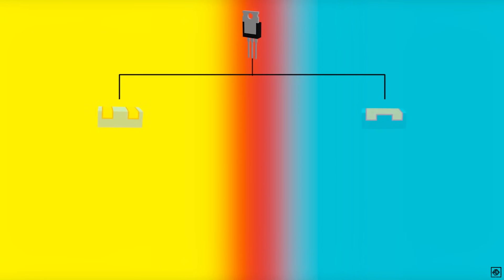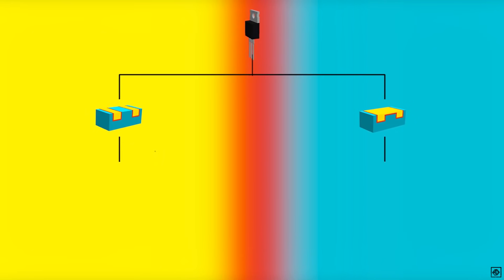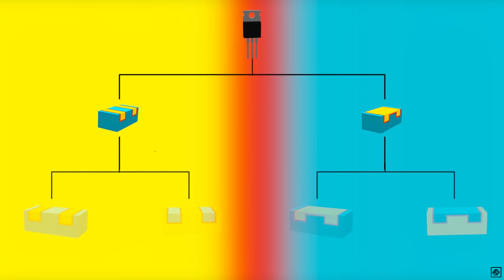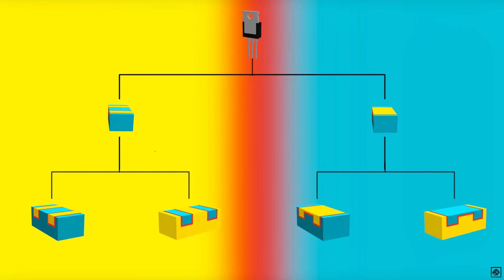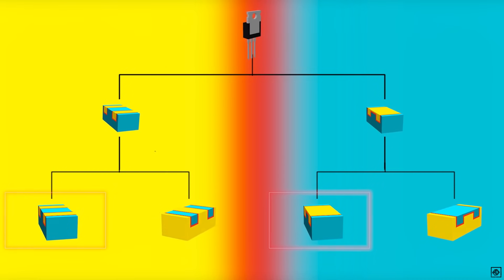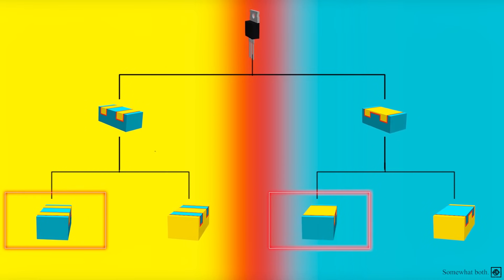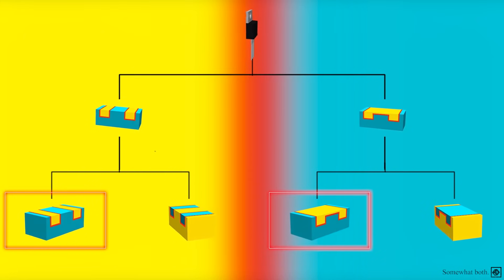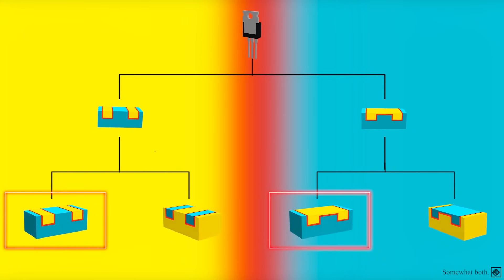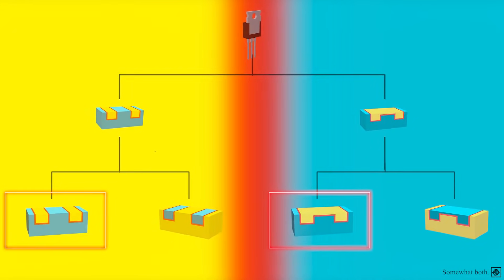MOSFETs are of two types: enhancement type and depletion type. Both types are further divided into two types: N-channel and P-channel. In this video, we will look at N-channel MOSFET only. First, let's see the N-channel enhancement type MOSFET.